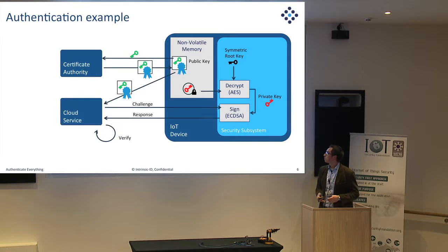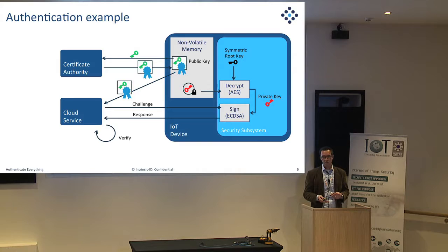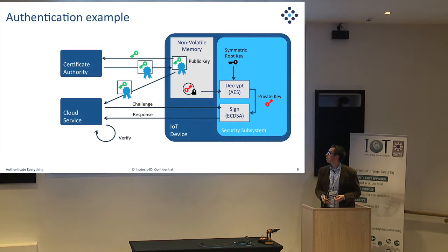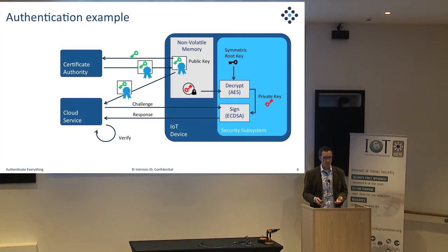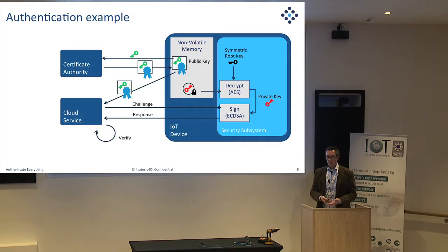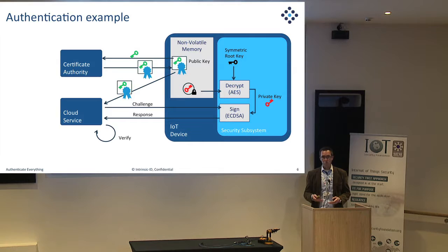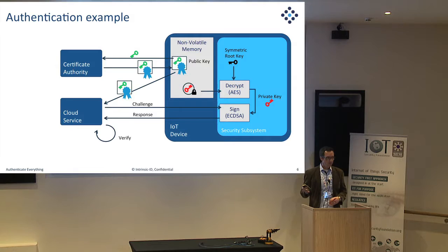Coming back to authentication: when using asymmetric cryptography, the verifying party needs to be assured it's working with the correct public key for that device. So we need some authority to certify a public key and put a certificate on the device. Once that's done, other services or devices can use the certificate to authenticate the device — they can be assured of the public key's correctness. They can then give a challenge to the security subsystem, which decrypts its private key using the root key in the device, and responds by signing the challenge.